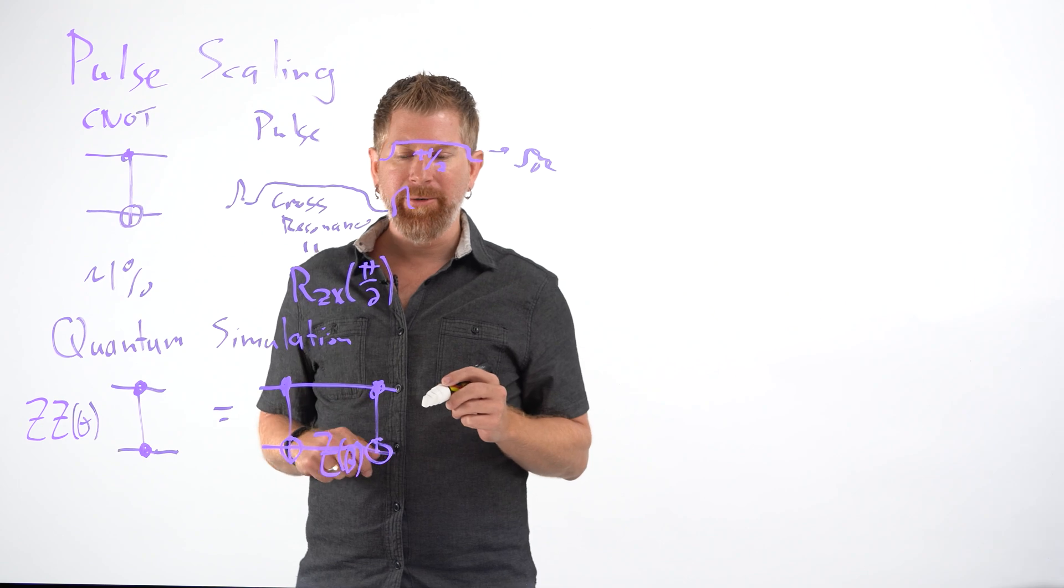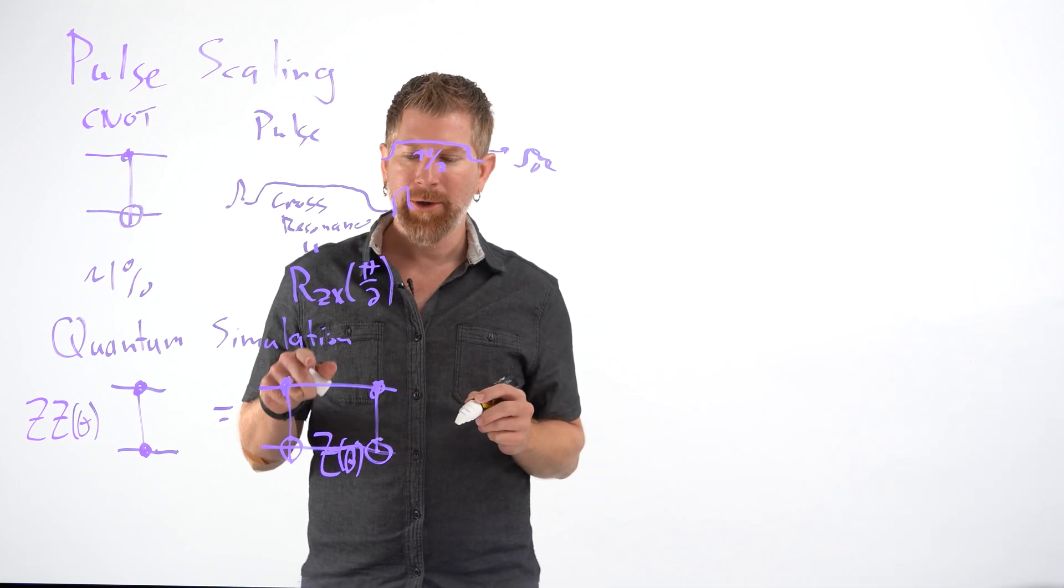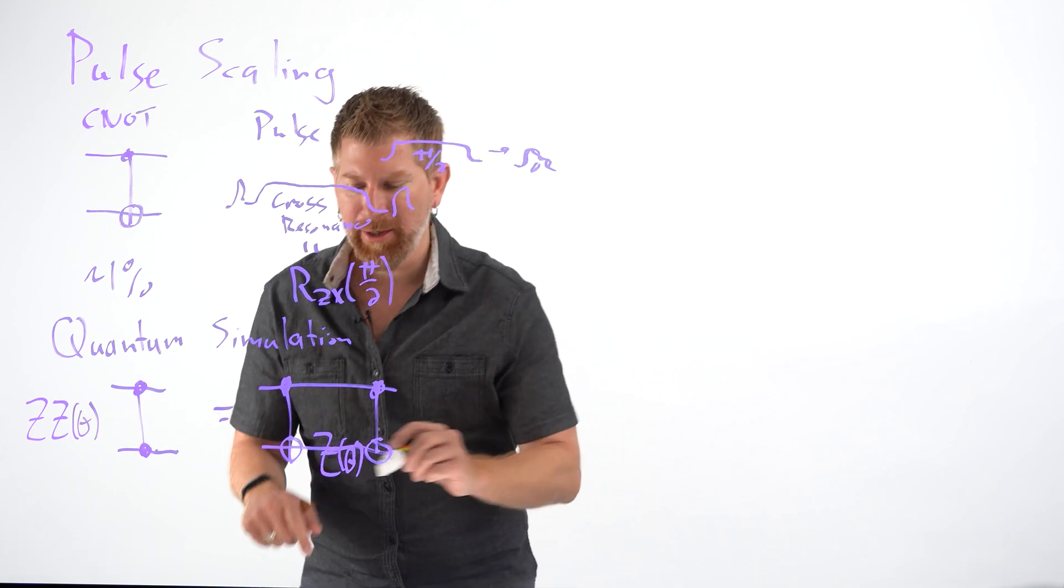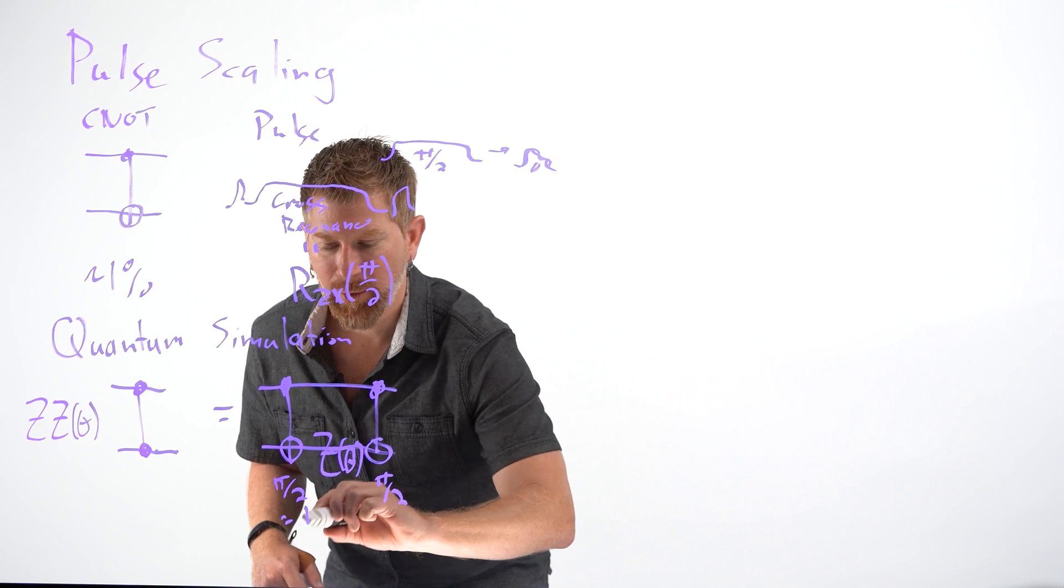So this could be efficiently represented by something called a frame change on our superconducting hardware. So no matter what angle I'm doing here, I'm going to get pi over 2, pi over 2, each one of those with 1% error.